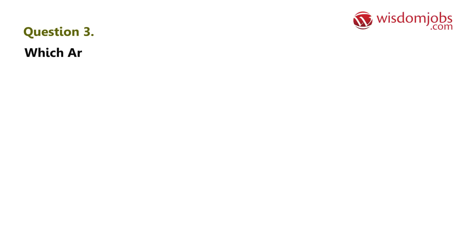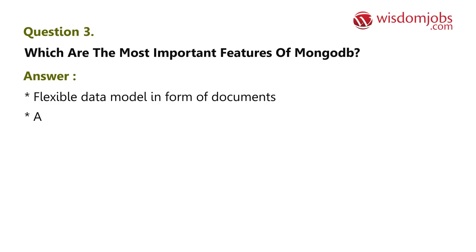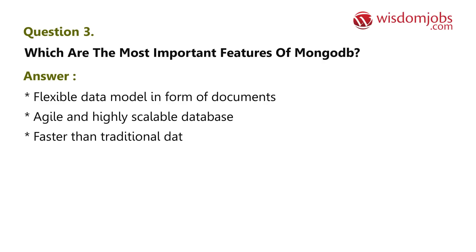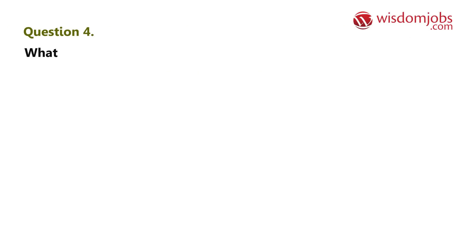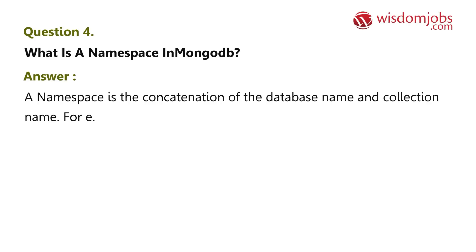Question 3: Which are the most important features of MongoDB? Answer: Flexible data model in the form of documents, agile and highly scalable database, faster than traditional databases, and expressive query language. Question 4: What is a namespace in MongoDB? Answer: A namespace is the concatenation of the database name and collection name — for example, school.students, with 'school' as the database and 'students' as the collection.